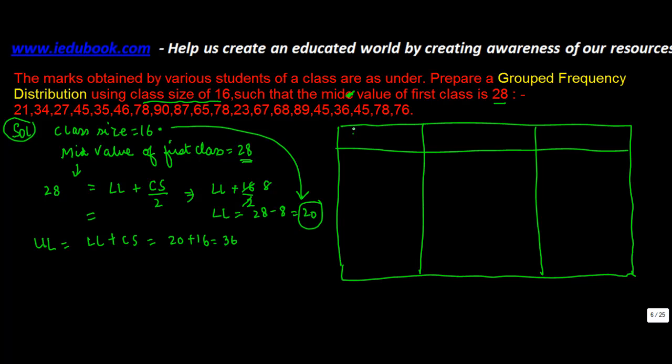So therefore, now we can write down that the marks are in the range of 20 to 36. Then add 16, which is the class size, to get 52. So we have 52 to 68, 68 to 84, 84 to 100. So you have got the various class intervals.